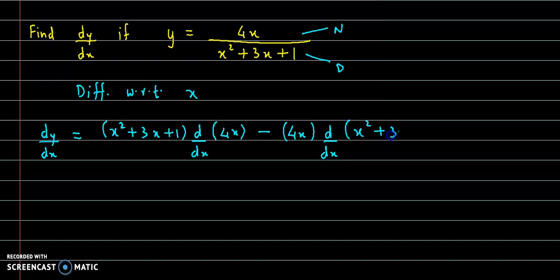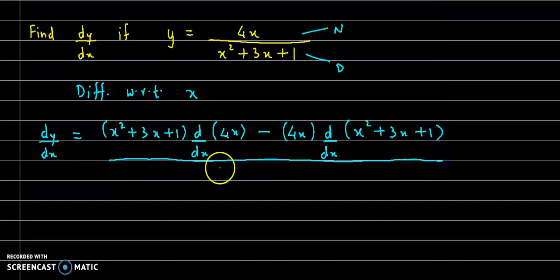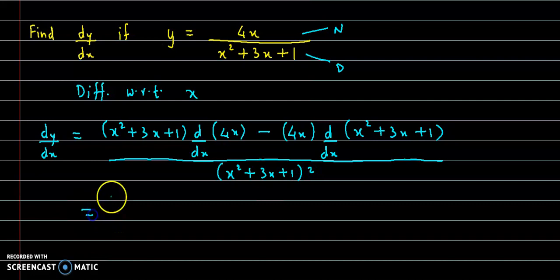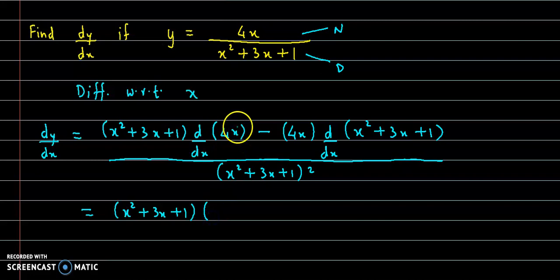Derivative of x square plus 3x plus 1, the whole thing divided by denominator ka square, that is x square plus 3x plus 1 the whole square. Now this term as it is: x square plus 3x plus 1 into 4, because the coefficient is 4 and the derivative of x is 1. So 4 into 1 gives us 4. So derivative of 4x is 4.